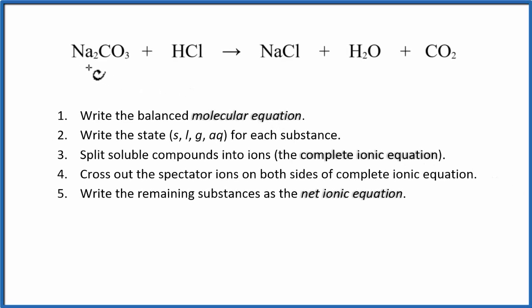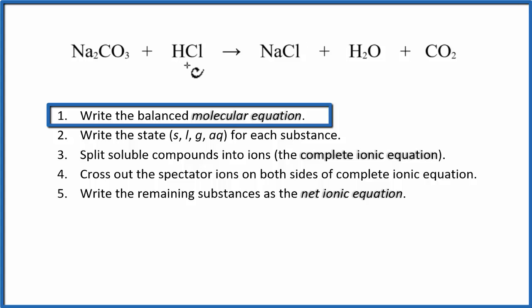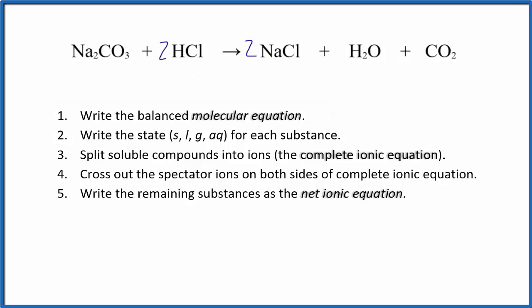To write the net ionic equation for Na2CO3 plus HCl, that's sodium carbonate plus hydrochloric acid, the first thing we need to do is balance this molecular equation. That would mean we'd have a 2 in front of the HCl and a 2 in front of the NaCl. In the description you'll find a link explaining how I balanced this.